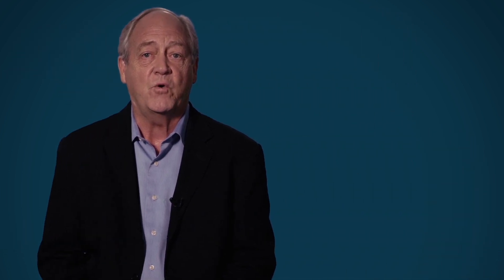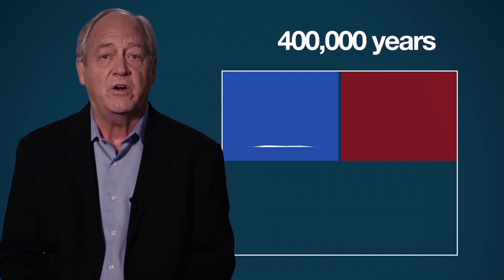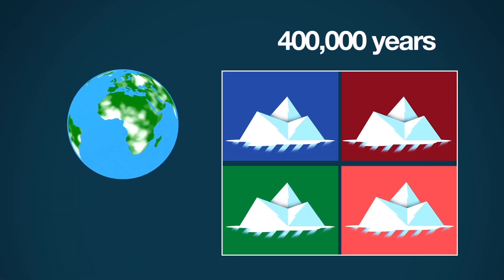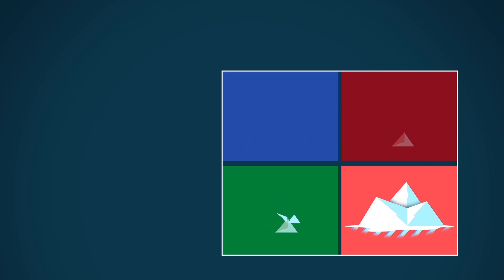During the past 400,000 years, there have been four major periods of glaciation, meaning that vast sheets of ice covered a good part of the globe, interrupted by brief interglacial periods. We are in one of those periods right now.